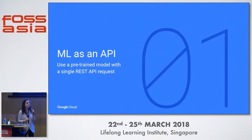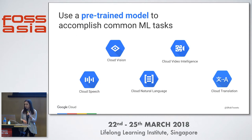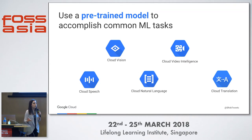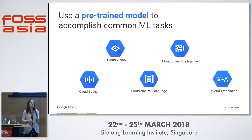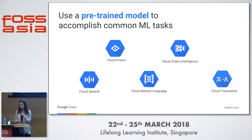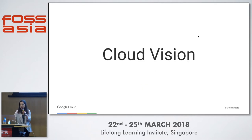Let's dive in, starting with machine learning as an API. On Google Cloud, we provide five different APIs for common machine learning tasks via a single REST API call: Vision for analyzing images, Video Intelligence for telling you what's happening in every scene of your video, Cloud Speech for transcribing audio to text, the Natural Language API for analyzing text in more detail, and the Translation API for translating text in over a hundred different languages. I'm going to cover Cloud Vision and Cloud Natural Language to give you an idea of what these APIs look like.